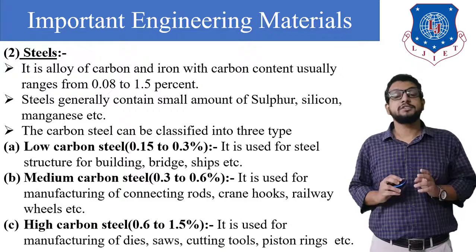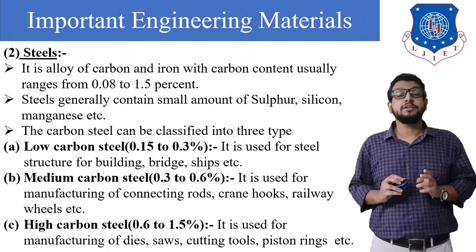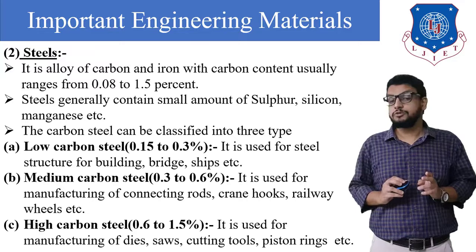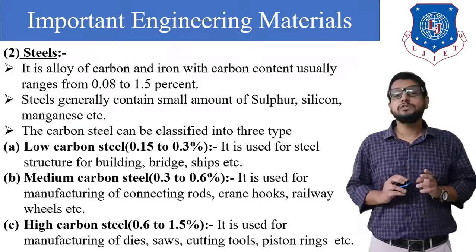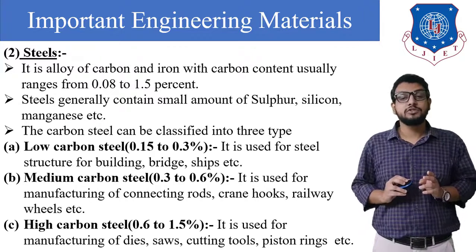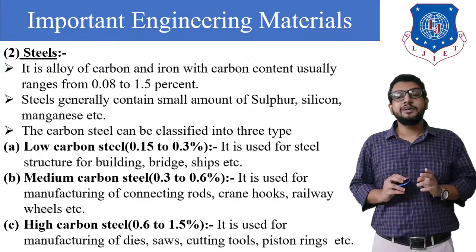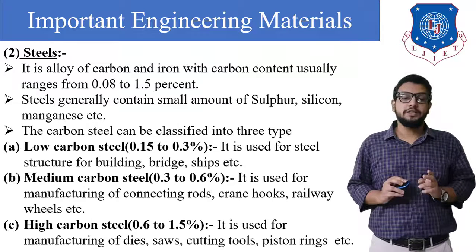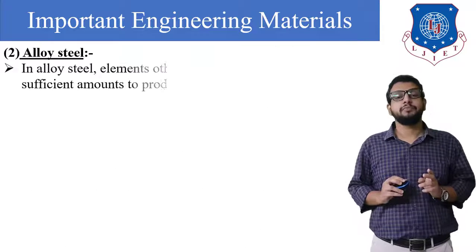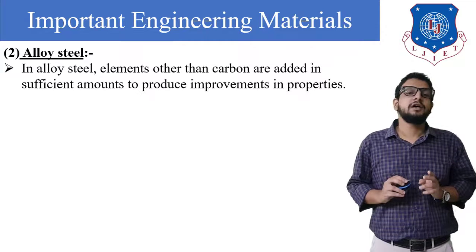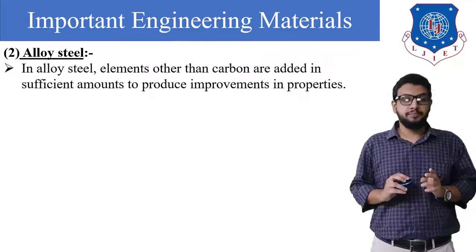The third type is high carbon steel, with a carbon content of 0.6 to 1.5%. It is used for manufacturing dies, saws, cutting tools, piston rings, etc. The next important material is alloy steel.